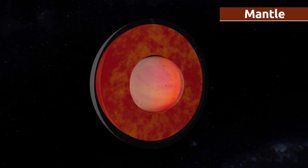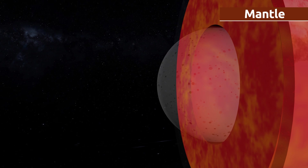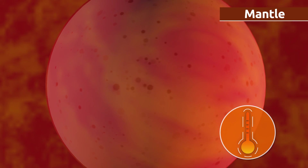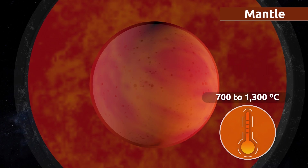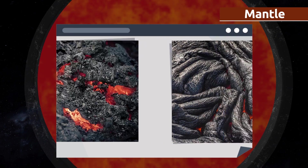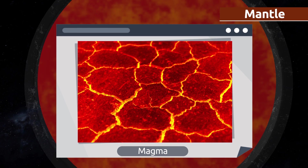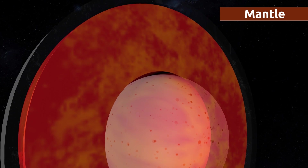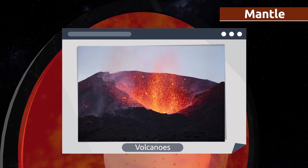The second layer of the geosphere is called the mantle. It makes up 82% of the Earth's volume, being 2,900 kilometers thick. The temperature of the mantle is really high, ranging from 700 to 1,300 degrees Celsius — that's why it's made up of molten rock called magma. Sometimes magma finds its way up to the surface and flows through the void between the tectonic plates. This is when volcanoes erupt.